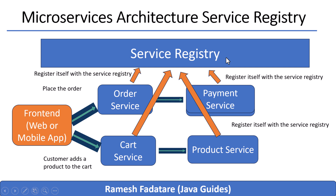Let's imagine you are building an online shopping platform. You've broken the system down into separate microservices: a product service that handles product details, a cart service that manages what users add to their cart, an order service that creates the final order, and a payment service that processes payments. Each of these services runs independently — they may even be written in different languages, deployed on different servers, and scaled differently depending on traffic.